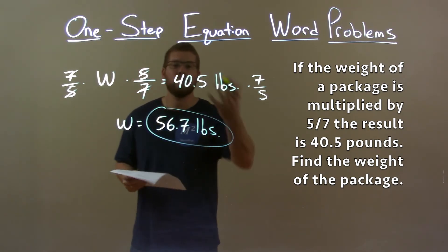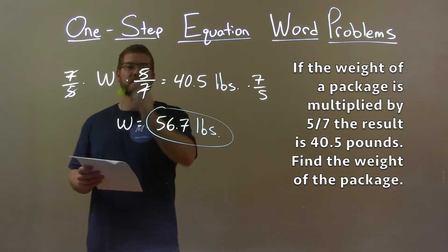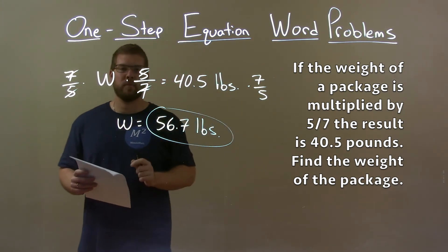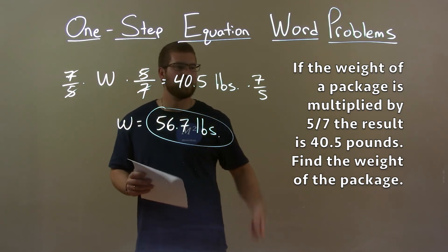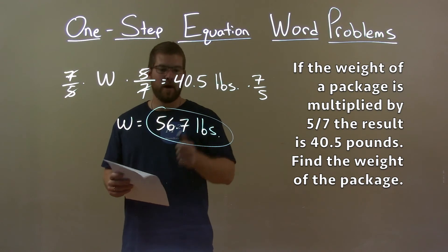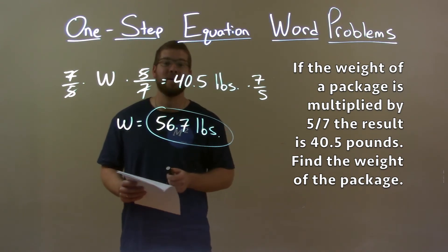With that information, we came up with an equation, w times five-sevenths equals 40.5 pounds. Then, we solve for w. Multiply both sides by seven-fifths, giving me w by itself, the weight of the package, equal to our final answer, 56.7 pounds.